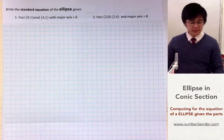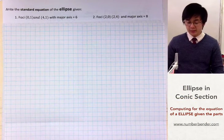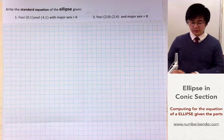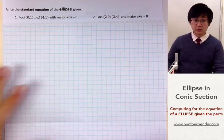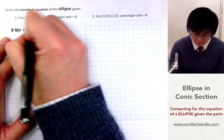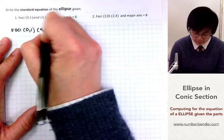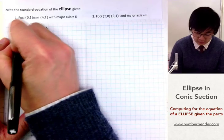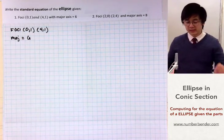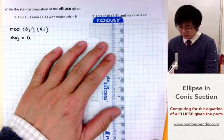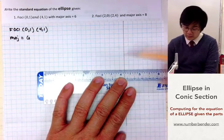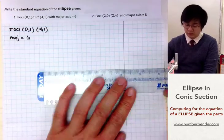Today we're going to be working on analyzing an ellipse. We have two problems here with the given foci and major axis. To start with, we're going to be graphing the given information — that's the foci and the major axis — just like what we did with our parabola. We need to sketch the given information on our graphing paper so we can easily visualize the parts that are given to us.